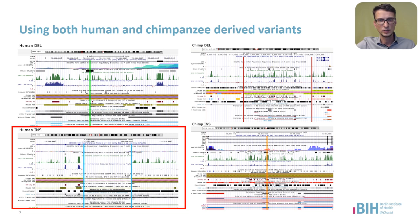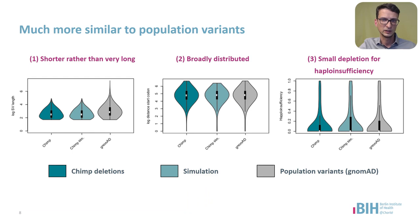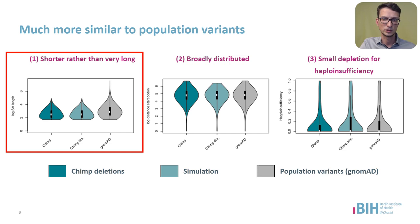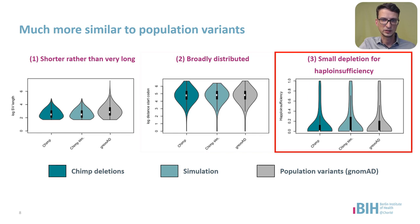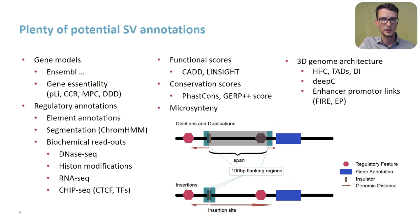Now, how do these variants look like when we go back to the same metrics that we checked for ClinVar? Well, we no longer see the extreme length shift, and the chimpanzee-derived deletions tend to be shorter, in agreement with long-term purifying selection. The SVs are also at a similar distance to coding genes as population variants, and we also don't see an extreme depletion for haploinsufficiency genes. So having a larger and less biased training dataset, we can think about the vast number of available annotations.